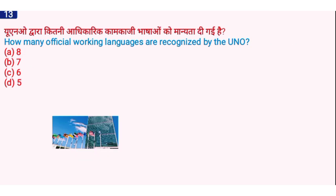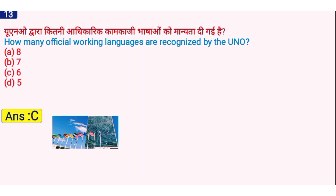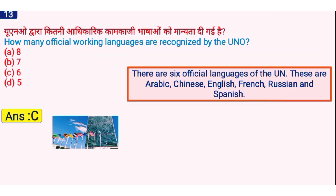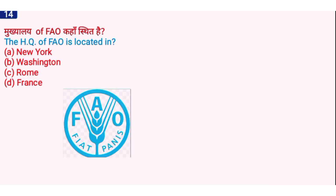How many official working languages are recognized by UNO? The right answer is option C, 6. The 6 official languages of UNO are Arabic, Chinese, English, French, Russian, and Spanish. You have to remember all of them, as questions like 'which among the following is not a language recognized by UNO?' are frequently asked in exams.